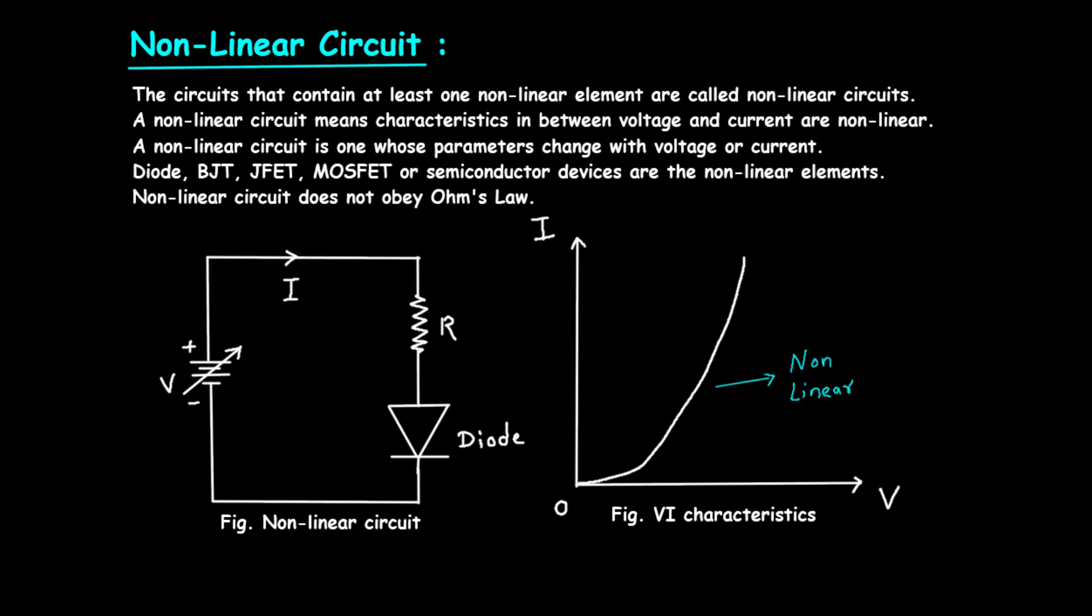Now, let's discuss the voltage current characteristics of a non-linear circuit. On the right side of the screen, you'll see a graph showing these characteristics. The horizontal axis represents voltage, or V, and the vertical axis represents current, or I.